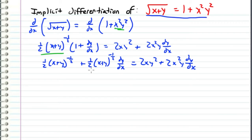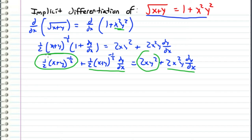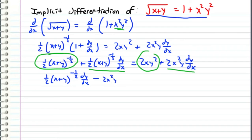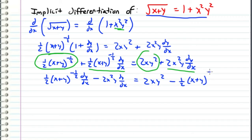Now I'm going to put both terms that have a dy/dx on the left-hand side, and the ones that don't on the right-hand side. When we separate these terms, we get one-half times (x plus y) to the negative one-half dy/dx minus 2x²y dy/dx, and this equals 2xy² minus one-half times (x plus y) to the negative one-half.